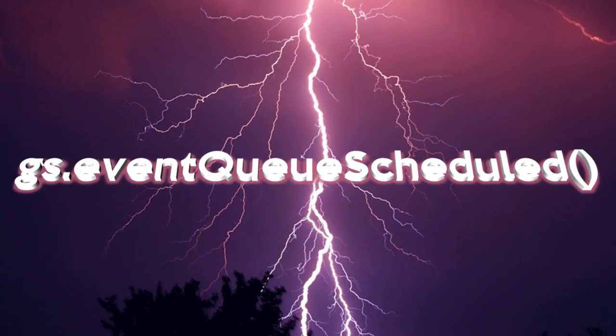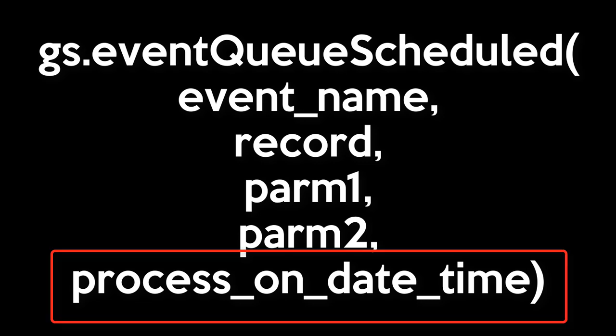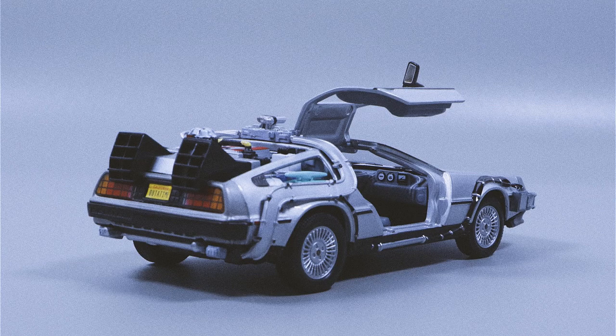This time we'll cover gs.eventqueue scheduled. The gs.eventqueue scheduled function does the exact same thing as gs.eventqueue, but takes one more parameter — the date you want the event to be processed. Now you have the ability to cast an event into the future.